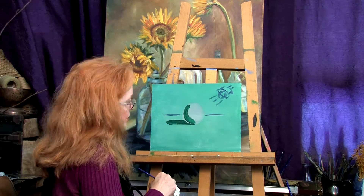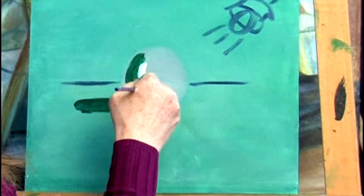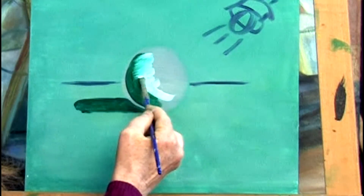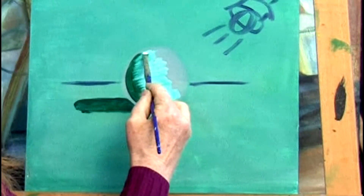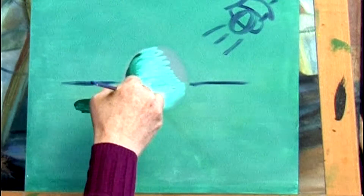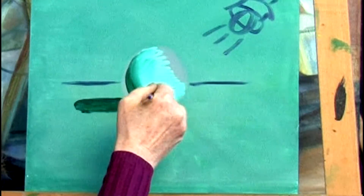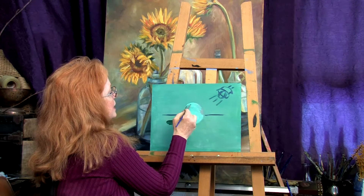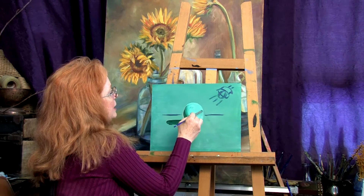Now I'm going to add a little bit of white to my color and put that in the middle right there, creating a middle tone by moving a little bit of that dark into the light. I'm just swishing it around and moving that up. You can take any shape, base it in with a middle tone, add a light and a shadow, and it will begin to look real.